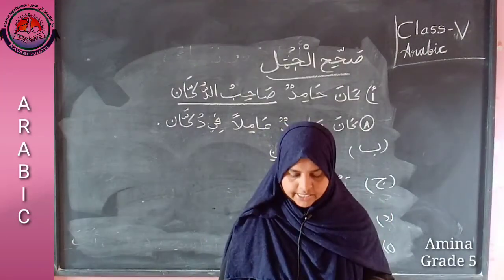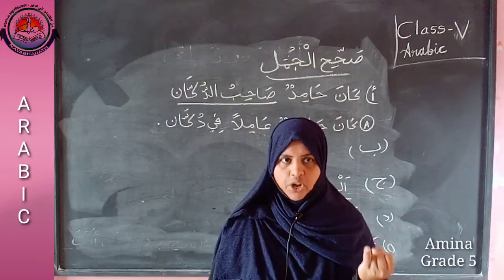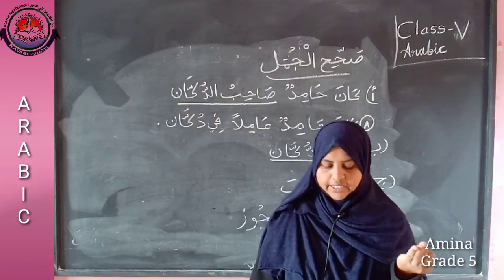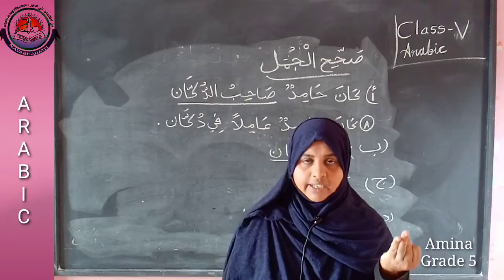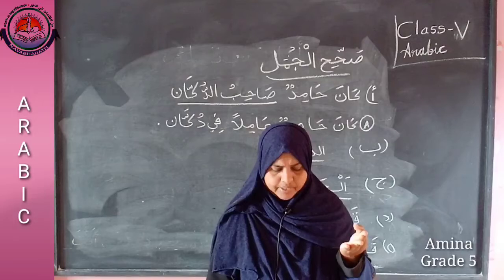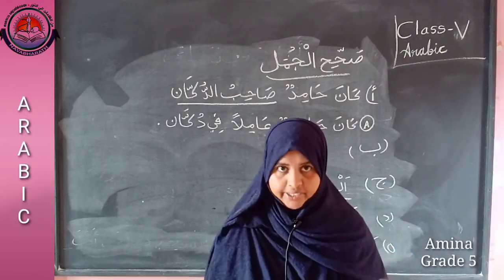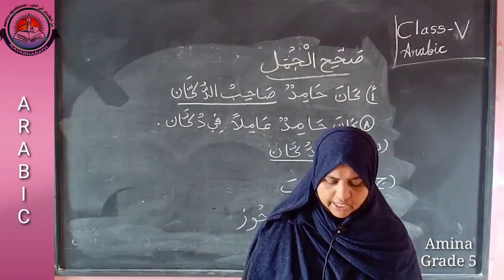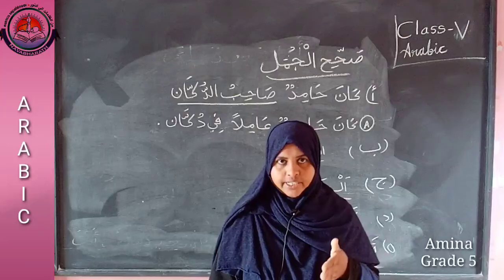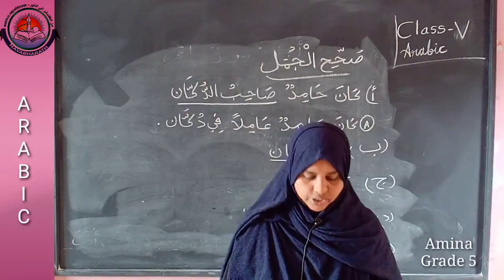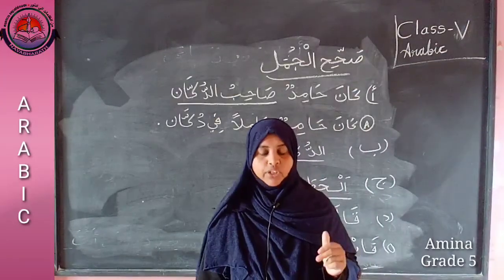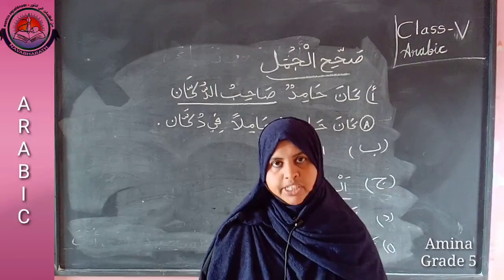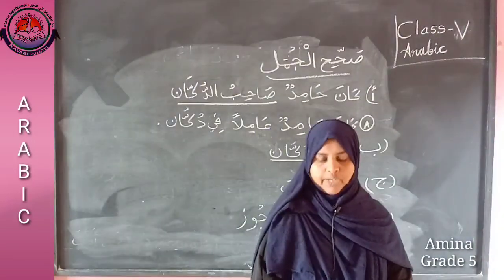Sohihil jumal - correct the sentences. First: kaane hamidun sahibu dukaan is wrong, we have to write kaane hamidun aamilan fi dukaan. Then ishtara hamidu albalaqya wa aada ilal bayit - ilal bayit is wrong, you have to write ilal dukaan. Next: kaane til ajuzu tehameilu albalaqya ala raasiha - balai is wrong, instead write al hataba. Next: kaala sahibu dukaan Allah yubarik fiik - change to kaala til ajuz. And hakka hamid kiswet al ajuzi fa gulliba sahibu dukaan - instead of gulliba write for bittasama. Inshallah we will meet again. Assalamualaikum warahmatullahi wabarakatuh.